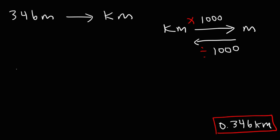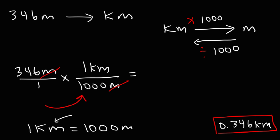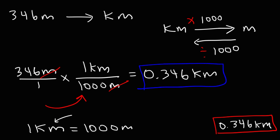Now let's show the work. Always start with the value you're given. In the next fraction, we need to put the unit meters on the bottom. Keep in mind that 1 kilometer is equal to 1,000 meters, so we put the 1,000 part on the bottom and the 1 kilometer on top. Because the 1,000 is on the bottom of the second fraction, that tells us we need to divide: 346 divided by 1,000, giving us 0.346 kilometers. That's how you show the work when converting from meters to kilometers.